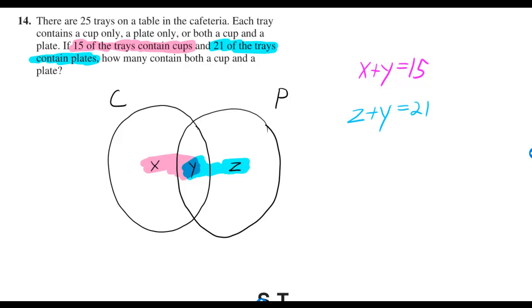The same logic tells you Z plus Y equals 21. The problem also told us there were 25 trays all together.